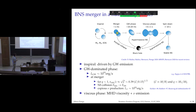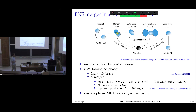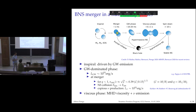Afterwards, things become much faster. The so-called merger phase is when the two stars actually crash against each other. It's very fast — the dynamical timescale is on the order of milliseconds. We already saw the movie from David, which was very nice.